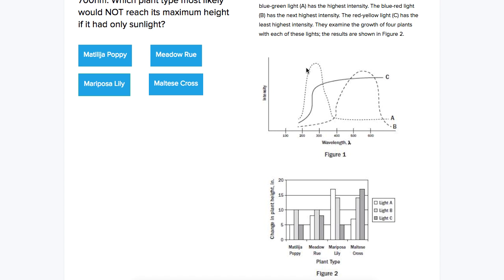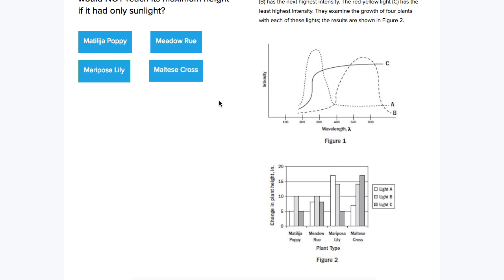So that seems like it's going to be meaningful information. We know that we have these three different lights, and they produce three different intensities at different wavelengths. And A is the one that's ruled out, that sunlight would not replicate.